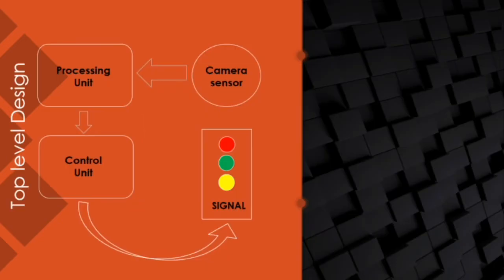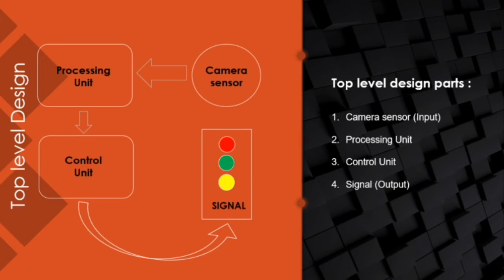Now let's talk about the top level design of our system. We are going to use Raspberry Pi 3B as the processing unit, as it is one of the most advanced processors available and is compatible with the camera module. With the help of Raspberry Pi we can also connect to our website to update information on it. As the camera unit we are going to use the Pi Cam sensor to capture images, which are then sent to the processor where processing is done and the required actions are taken.